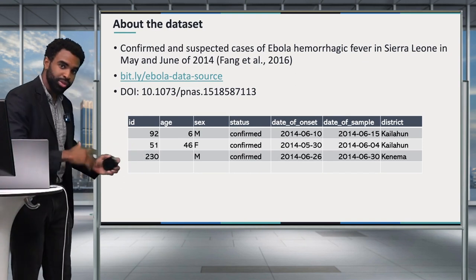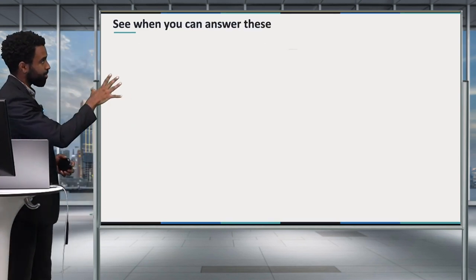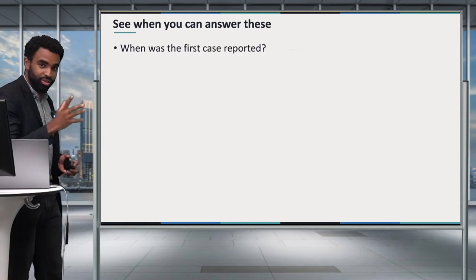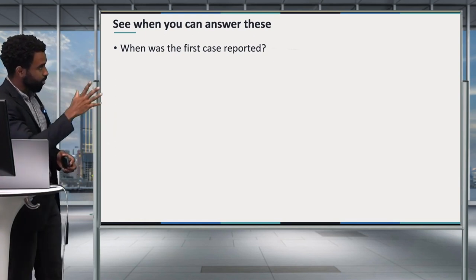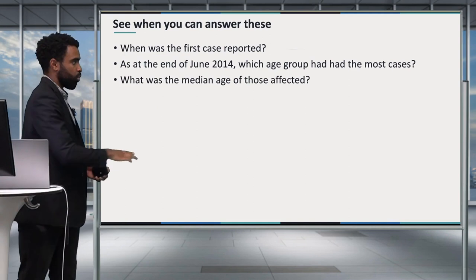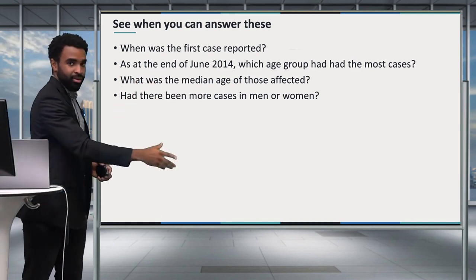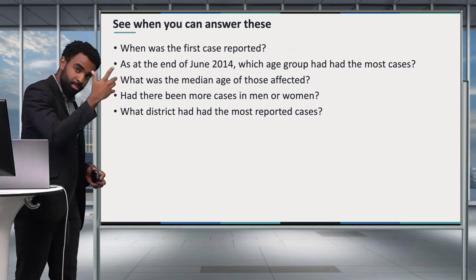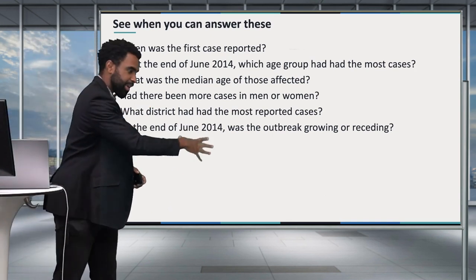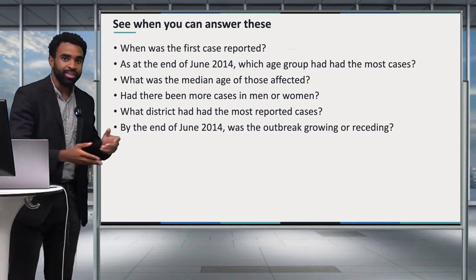As we work with this dataset, I want you to keep these questions in mind and see when you can answer them with the code you're learning. When was the first case reported? As of end of June 2014, which age group had the most cases? What was the median age of those affected? Have there been more cases in men or women? What district has had the most reported cases? And was the outbreak growing or receding by end of June 2014?